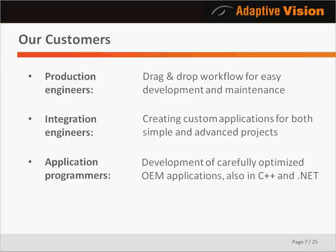The customers we deliver these products to can be divided into three groups. The first group are production engineers — with Adaptive Vision Studio they can start creating typical industrial applications after a two-day training without any programming skills, and can easily adjust their programs to changing requirements directly on the production line. The second group are system integrators who require an environment that is not only easy to use but also has great capabilities, using Studio to solve challenging real-world problems. The third group are application programmers, who use Studio to efficiently develop custom and advanced projects and often use the C++ or .NET library to integrate algorithms into a bigger solution.